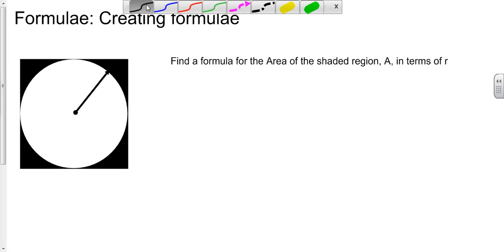In this video on formulae, we're looking at how you can create formulae. The problem I've created for this one is we've got this shape here which is made up of a square and a circle. All we know about the circle is it's got a radius from the center to the edge of r, and we're asked to find a formula for the area of the shaded region which is going to be called A in terms of r.